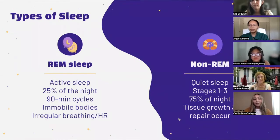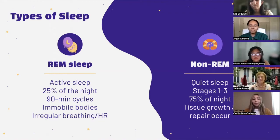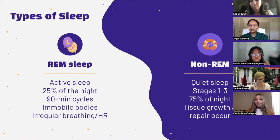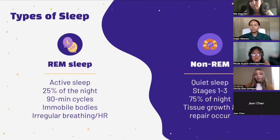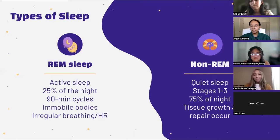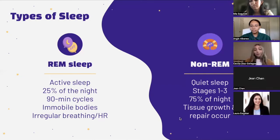There are two basic types of sleep: REM sleep, which stands for rapid eye movement, and non-REM sleep. A person cycles through all stages of REM and non-REM sleep several times during the average night, with increasingly longer and deeper REM cycles occurring toward the morning hours. REM sleep begins about 90 minutes after falling asleep and occurs during about 25 percent of the night. Our bodies are immobile, breathing becomes irregular and faster, and heart rate is higher. Most of our dreams occur during REM sleep, though some may occur during non-REM sleep.